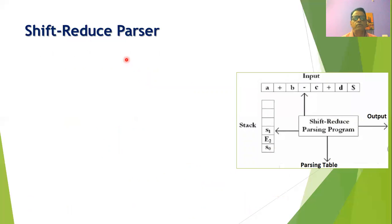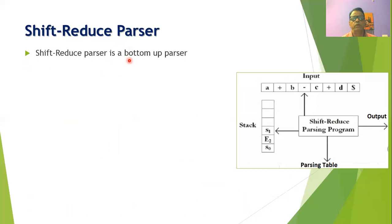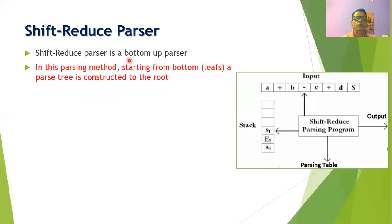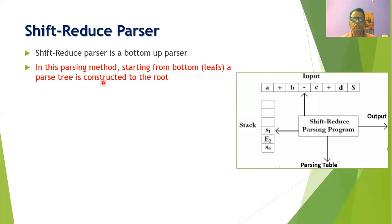Now we will discuss the shift reduce parser. It is a bottom-up parser — we start from the leaves and go upward to the root, constructing the parse tree. If we are able to reach the root, it is a successful completion of parsing. If we are not able to reach the root after trying all production rules, it is an unsuccessful completion of parsing.